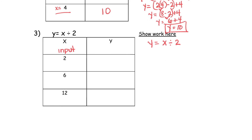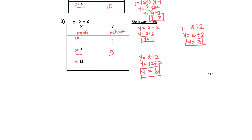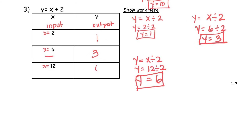Try number 3 on your own — pause the video. I like to put input and output just to help you remember at the beginning. This problem is a lot easier: x is equal to 2, x is equal to 6, x is equal to 12. Try these three on your own. When x is equal to 6, y is equal to 3. And when x is equal to 12 for the last one, y is equal to 6.